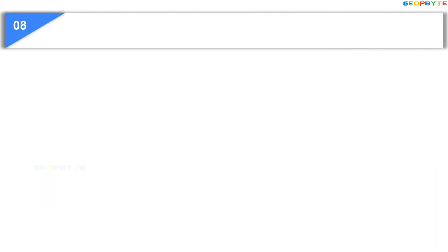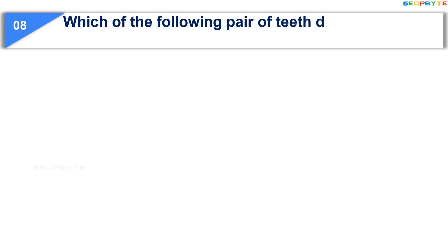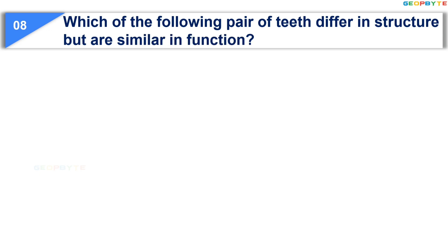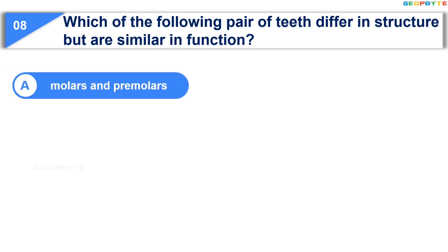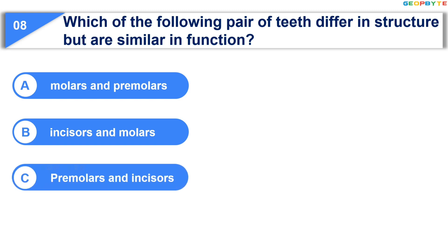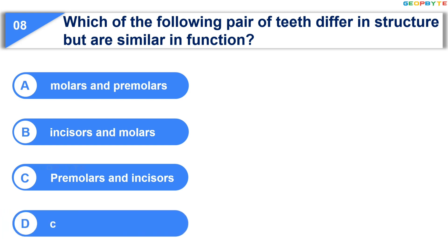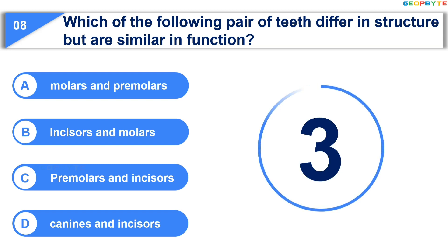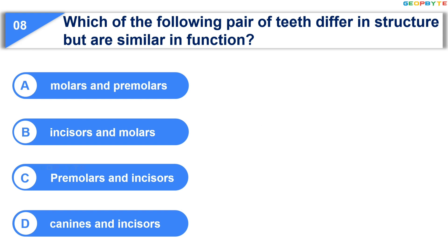Moving to the next question: which of the following pair of teeth differ in structure but are similar in function? Option A: molars and premolars; Option B: incisors and molars; Option C: premolars and incisors; Option D: canines and incisors. Your time is up and the correct answer is Option D: canines and incisors.